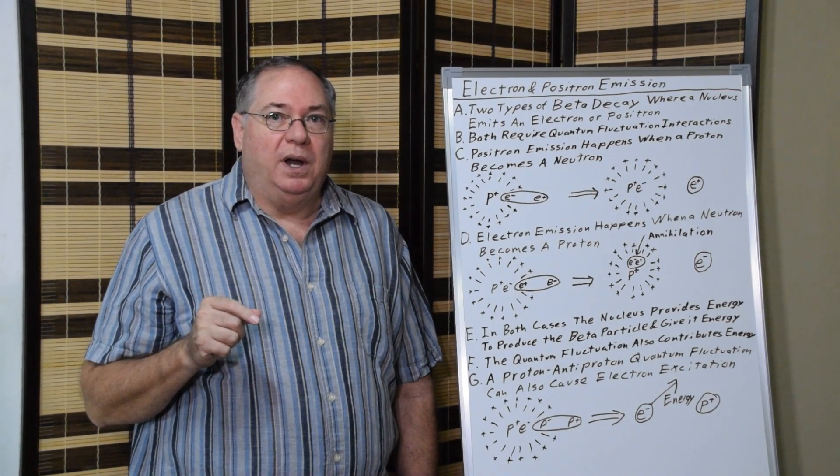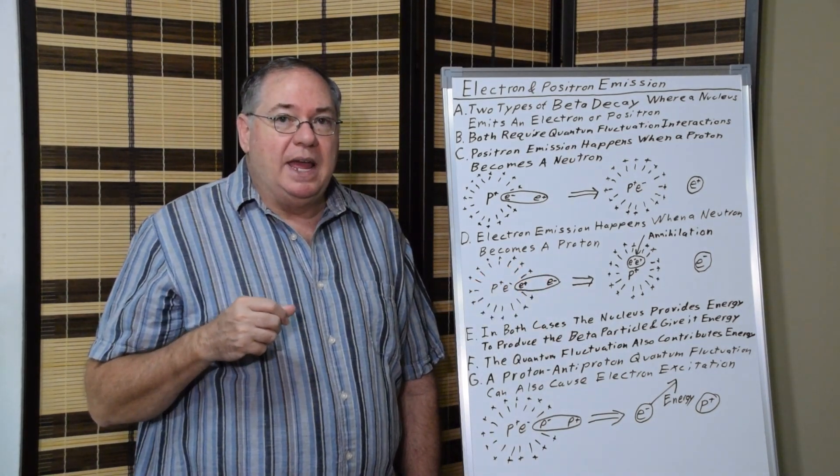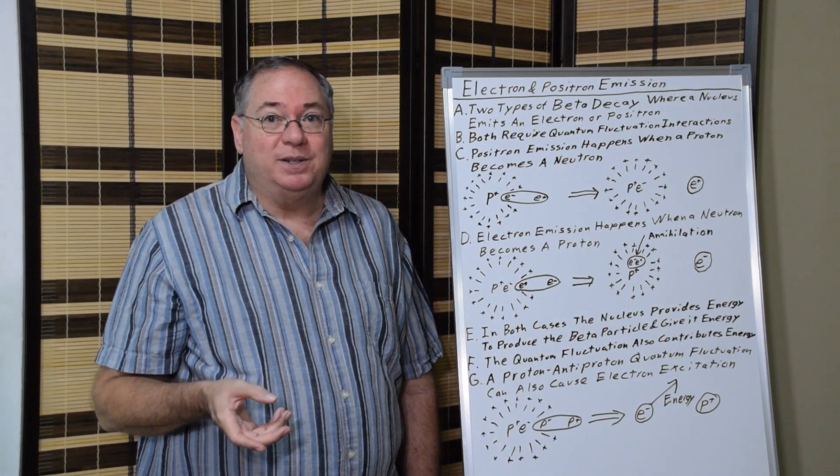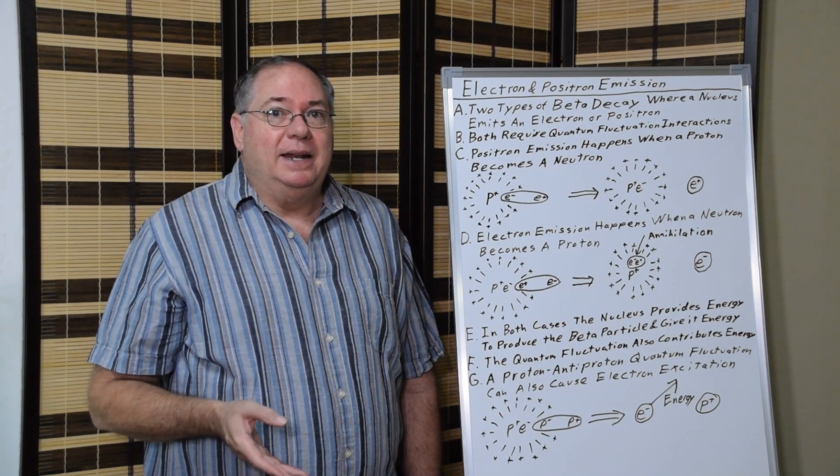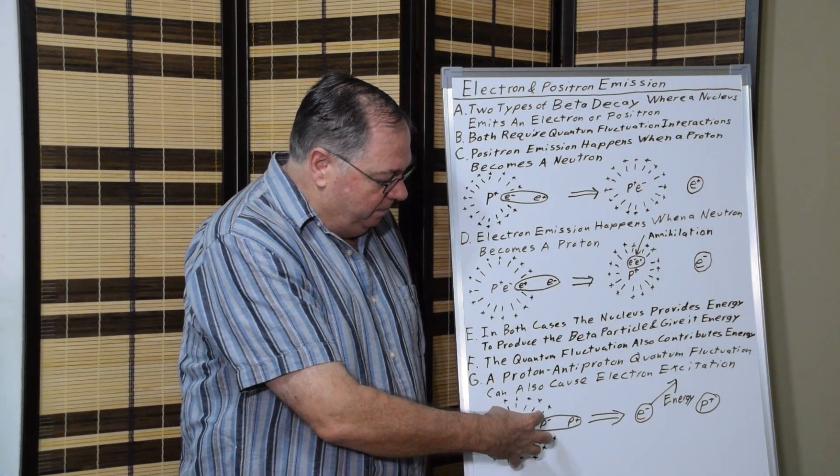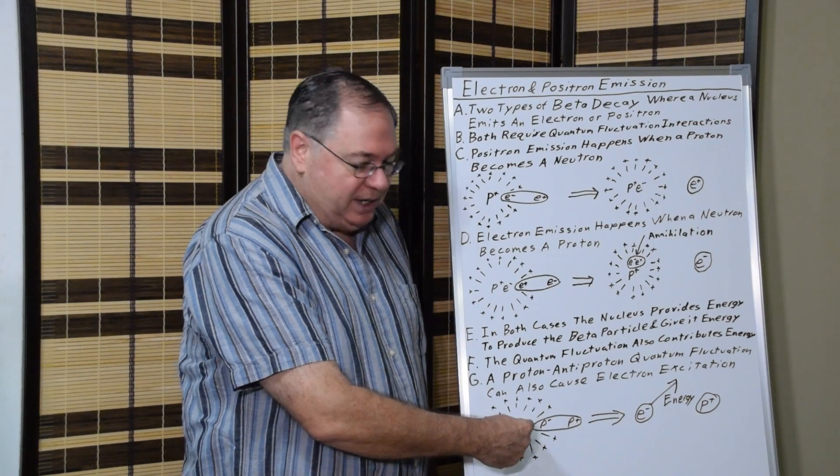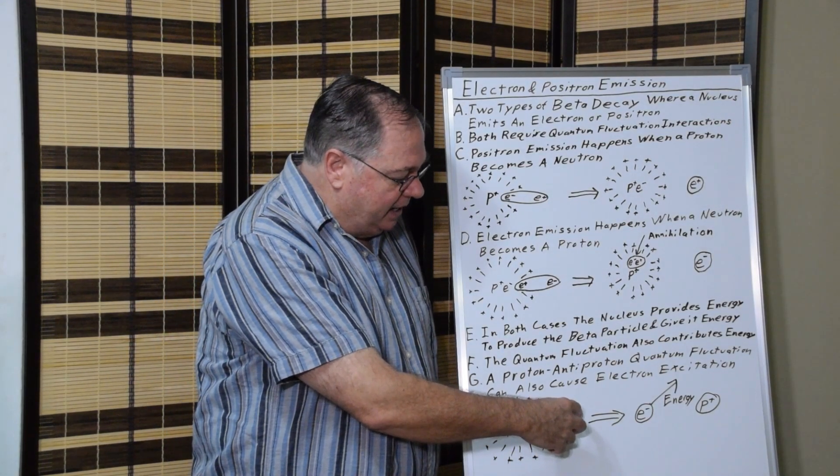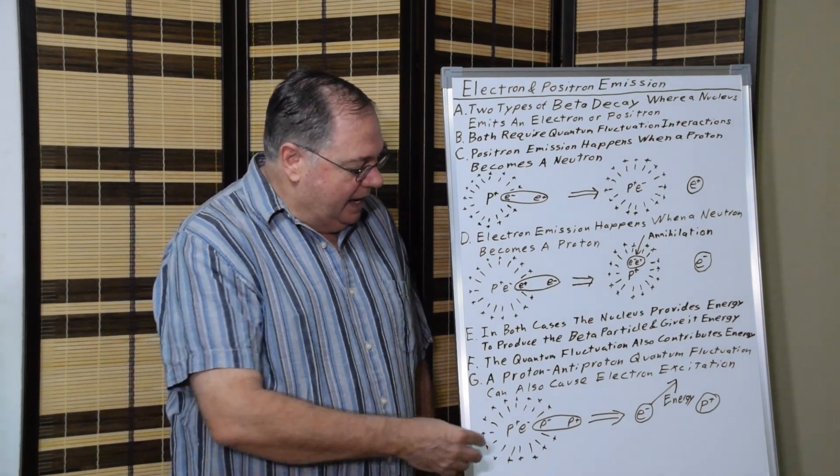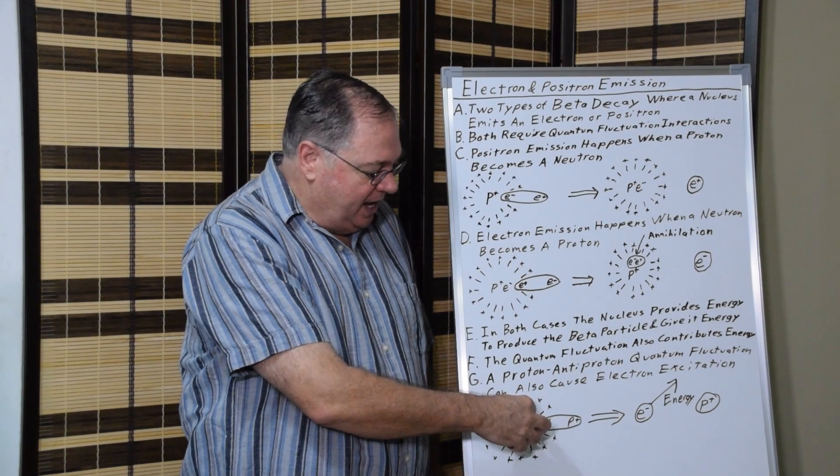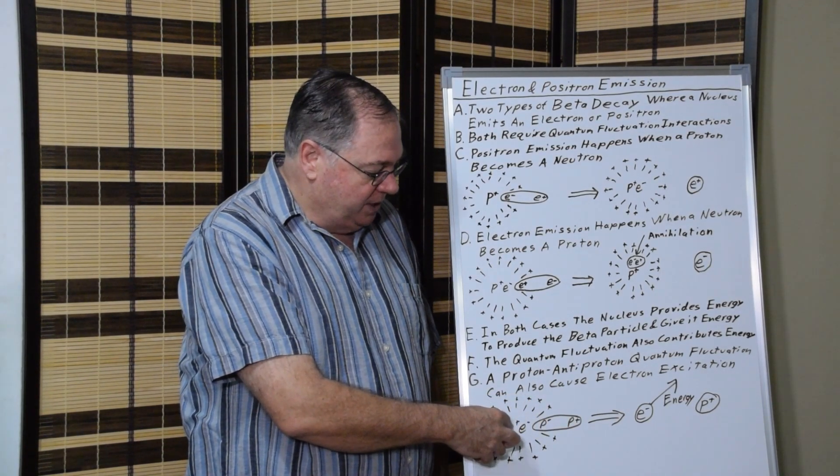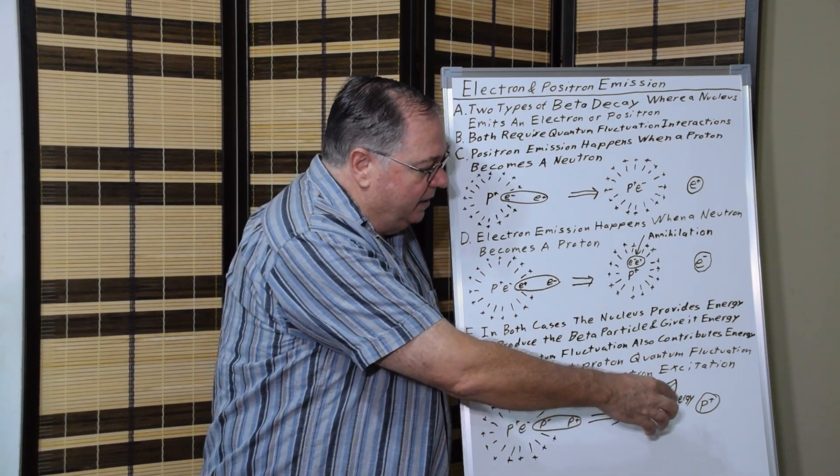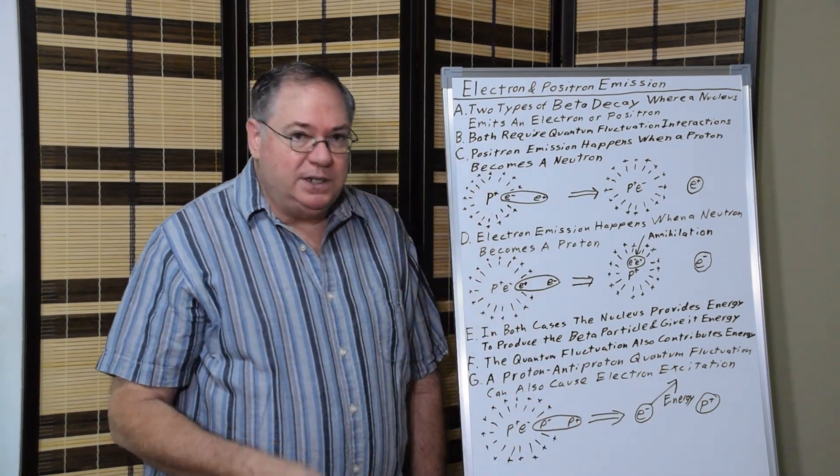We also have another situation where, instead of an electron-positron, we can have this neutron decay happening due to a proton and anti-proton quantum fluctuation. In the proton mediated beta decay, we have a neutron that has a bare proton and a bare electron inside of it, or something approximating that in the quark theory. Then you have a proton and anti-proton quantum fluctuation. If the anti-proton quantum fluctuation is inside, it will annihilate with the proton, leaving just an electron. And then the proton from the quantum fluctuation becomes free outside.